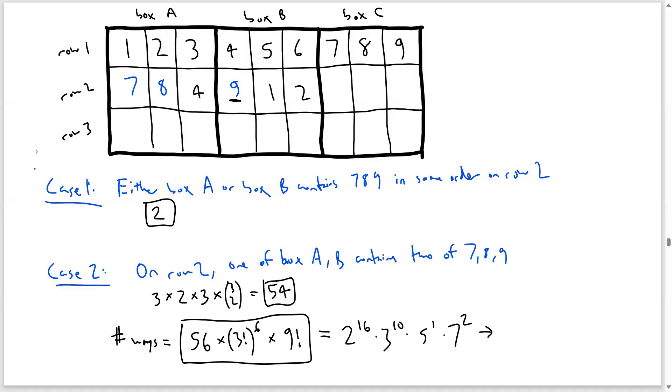And the problem asks for pa plus qb plus rc plus sd. So once we extract the answer, we're going to get 2 times 16 plus 3 times 10 plus 5 times 1 plus 7 times 2. This is equal to 81.